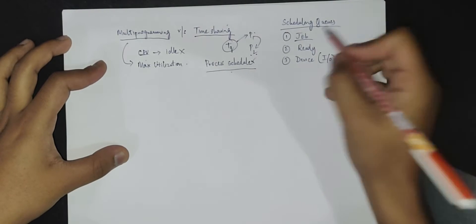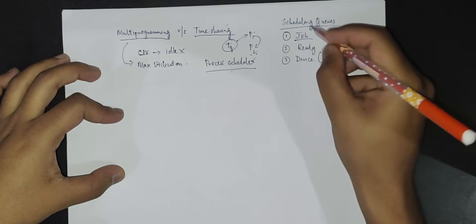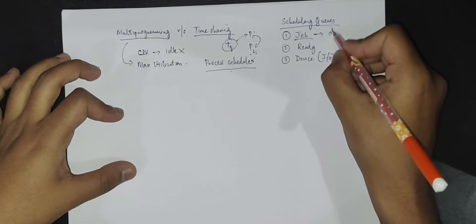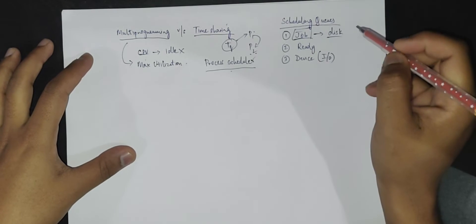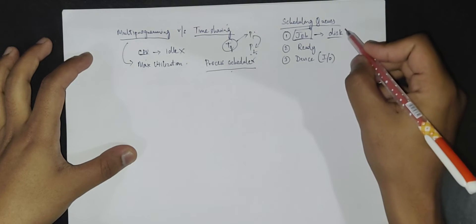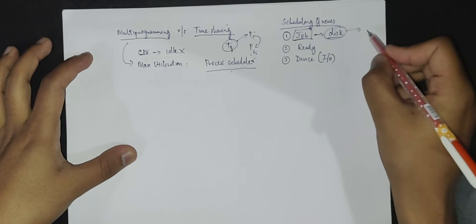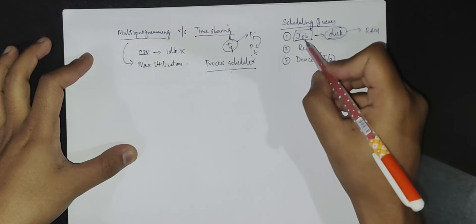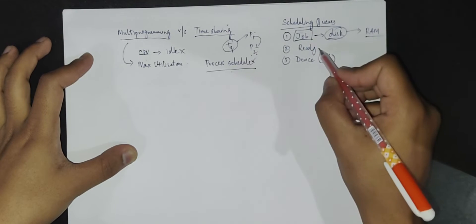What is a job queue? All the processes which are there in the system basically reside in this queue called the job queue — every process will be present in this job queue. This is essentially your disk. Every program that you write will be stored in the job queue. A program becomes a process when it moves from the hard disk or non-volatile memory to your volatile memory, which is your RAM.